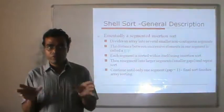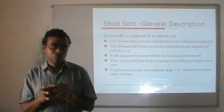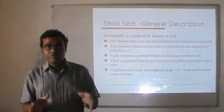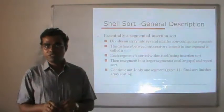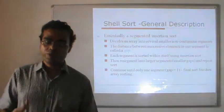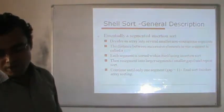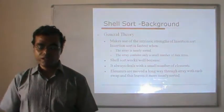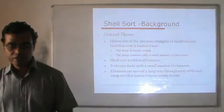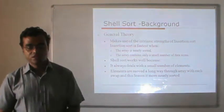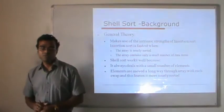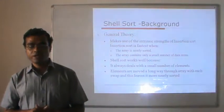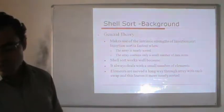We take the complete data, form various segments with a larger gap, sort them individually with insertion sort, combine them, then take a smaller gap, sort individually again with insertion sort, combine them, and keep repeating until we get a gap of 1. This makes use of the intrinsic strength of insertion sort — it runs fast when the array is nearly sorted and contains only a small number of displaced elements. Shell sort works well because it always deals with smaller segments, and elements move a long way through the array with each step, producing more nearly sorted data.